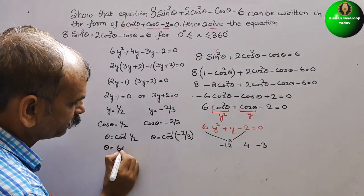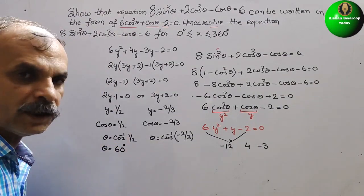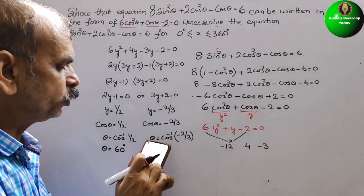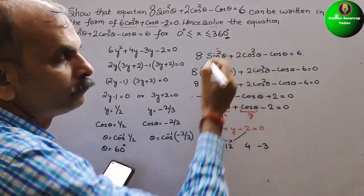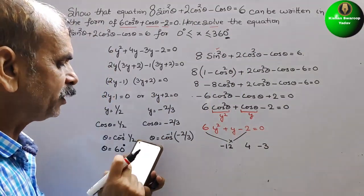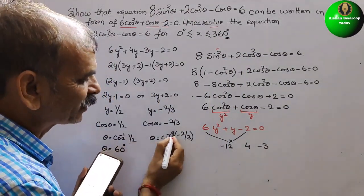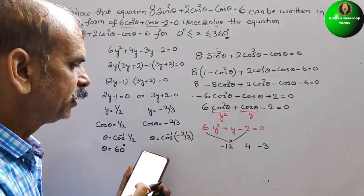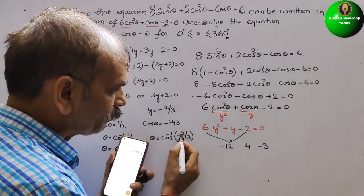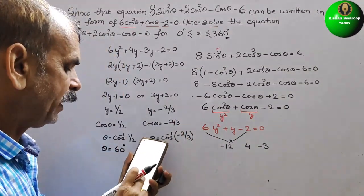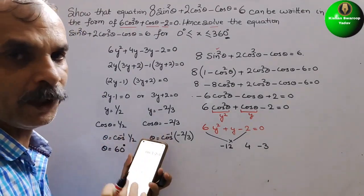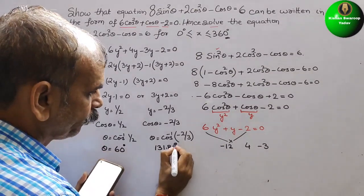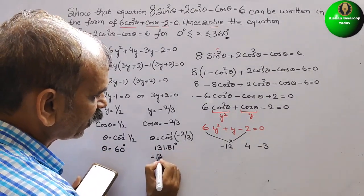For cosθ = -2/3, we need a scientific calculator. Set to degree mode, press inverse, then cos⁻¹, and enter -2/3. The value obtained is 131.81°, which we take as approximately 131.8°.